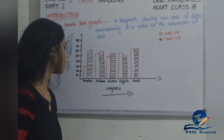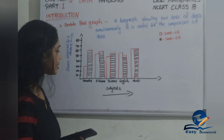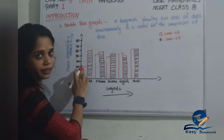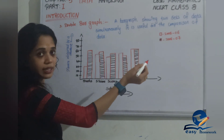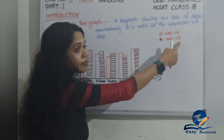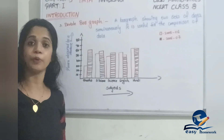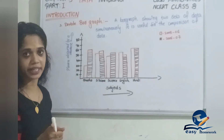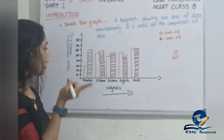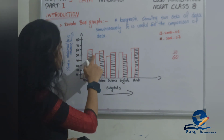In the next section, we look at subjects. In 2005-2006, the mark for Hindi is 30 marks. The mark for Maths is 60 marks. Then for Social Science, the mark is 55 marks.